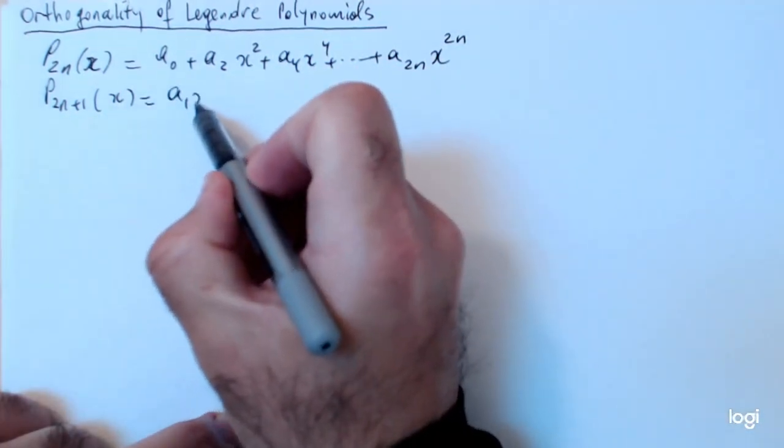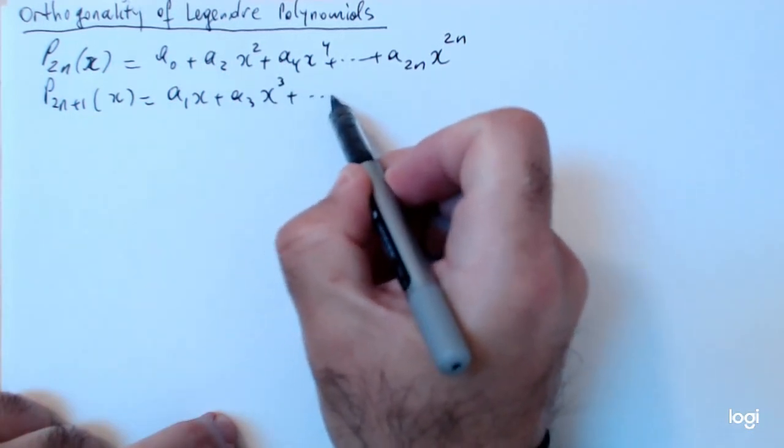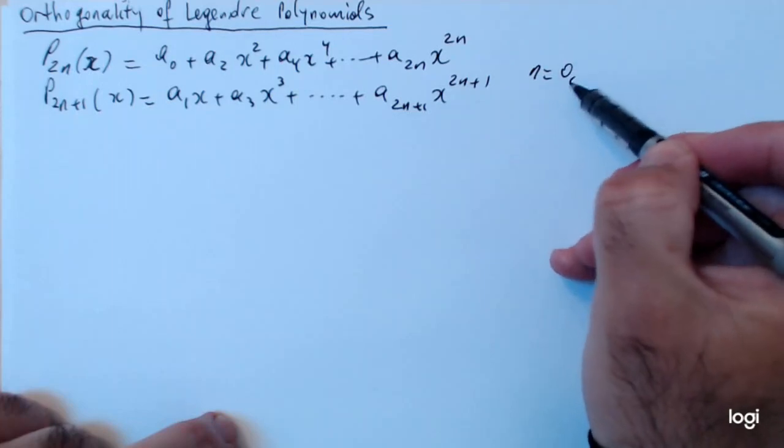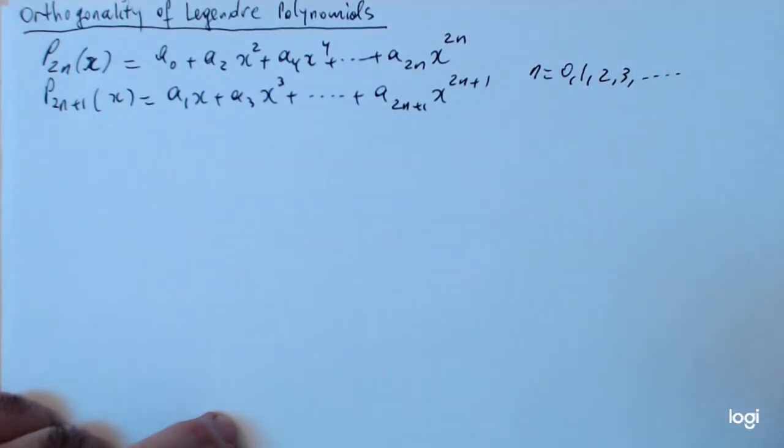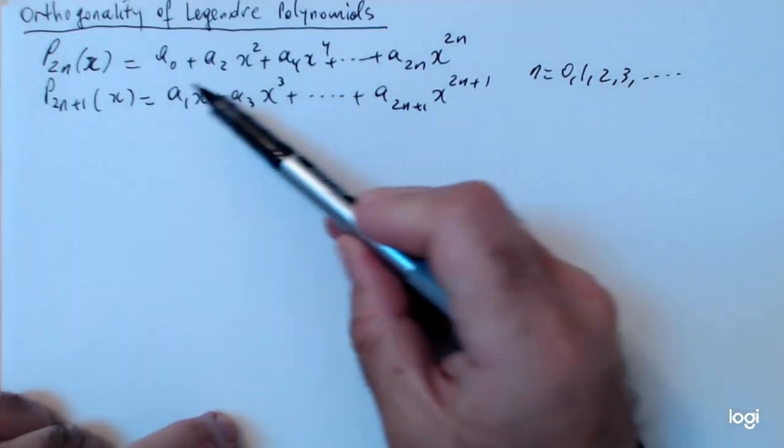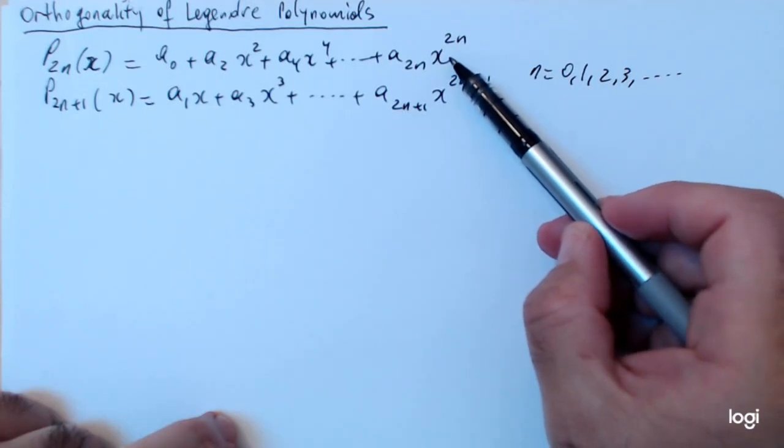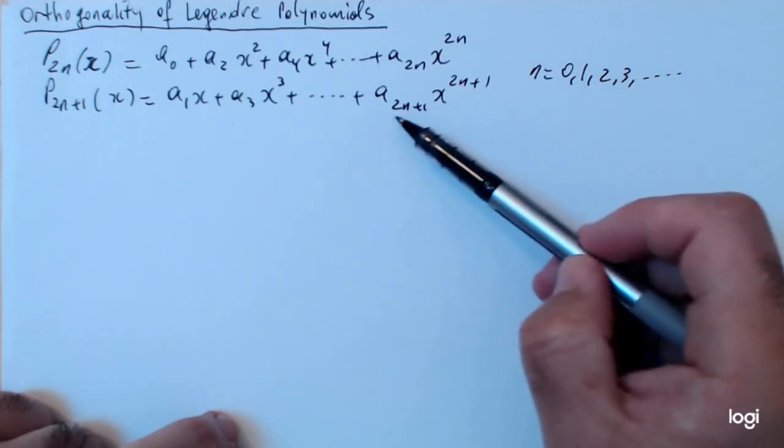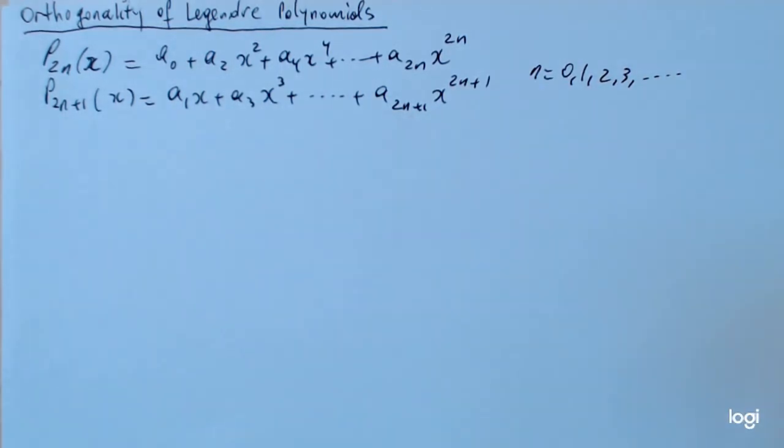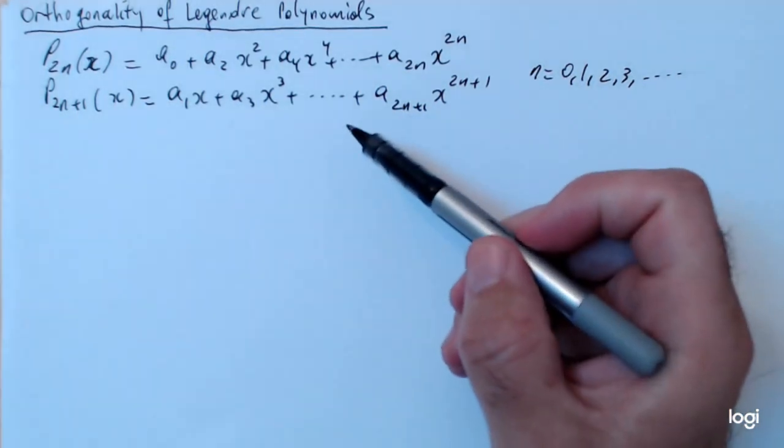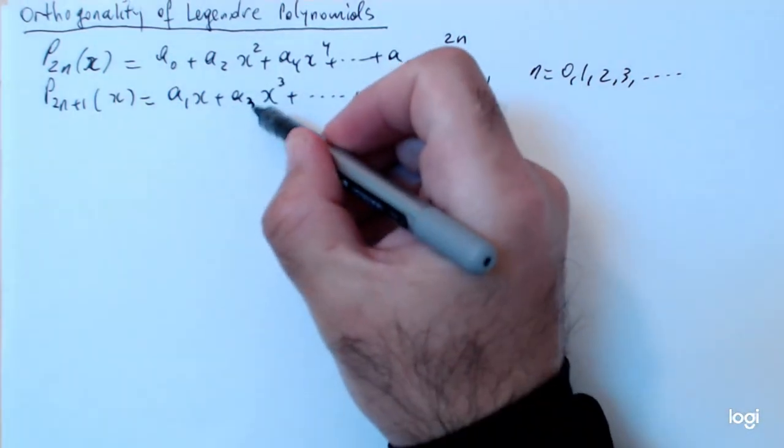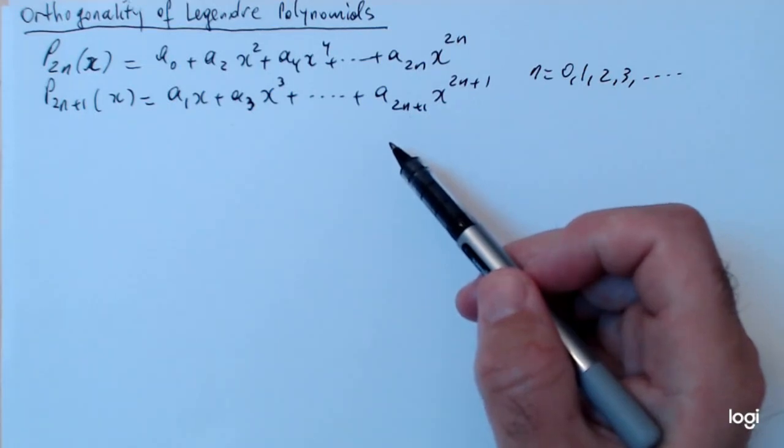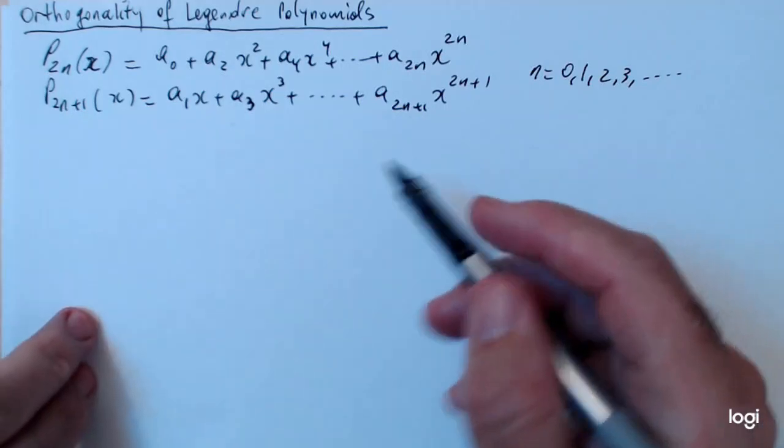P sub 2n plus 1 of x will be a_1 x plus a_3 x to the power 3 dot dot dot a sub 2n plus 1 x to the 2n plus 1. This way avoids any confusion about what the values of n are. So n goes to all the natural numbers 0, 1, 2, 3 and so on. This guy will have only the even powers and this one the odd powers. When n equals 0, notice that you get the first term in this polynomial a_1 x to the first and so on.